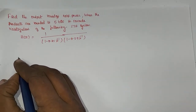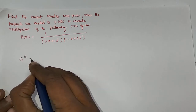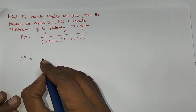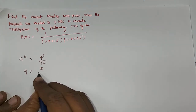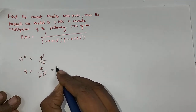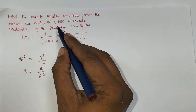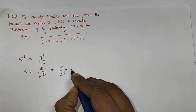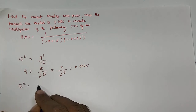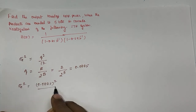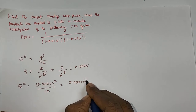The steps involved in finding the output round-off noise power: first, find the noise variance in the error signal due to quantization, which is equal to Q² divided by 12. The quantization level Q is equal to R divided by 2^B. In this problem the voltage range is not given, so R = 2. So Q = 2 divided by 2^5 = 0.0625, and σe² = (0.0625)² / 12 = 3.255×10⁻⁴.